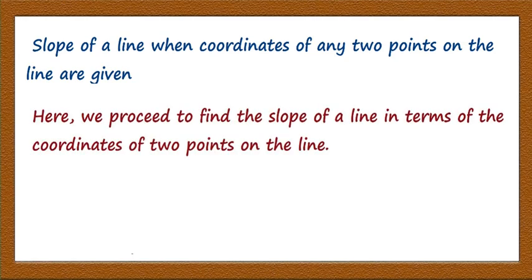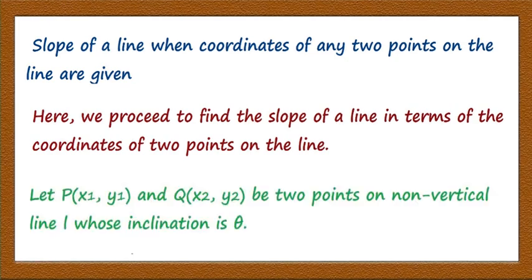We proceed to find the slope of a line in terms of coordinates of two points on the line. If you take any two points on the plane, you can get a unique line by joining the points. Let P(x1, y1) and Q(x2, y2) be any two points on a non-vertical line L whose inclination is theta.